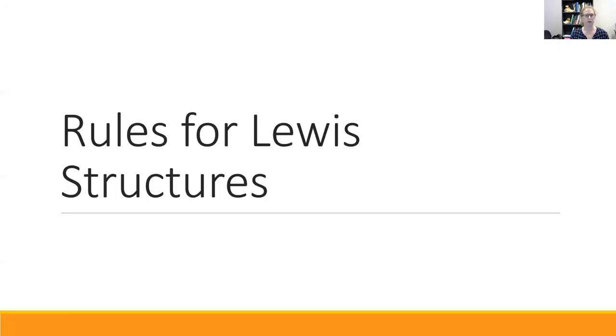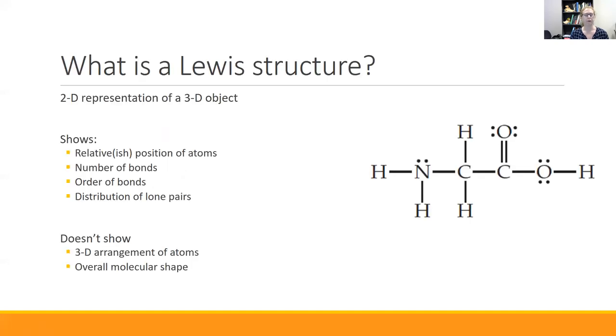In this video, I'd like to take a look at Lewis structures, which are a way of representing chemical compounds that can be really useful to us. What Lewis structures do is they take a three dimensional object, a molecule, and they represent it in 2D.